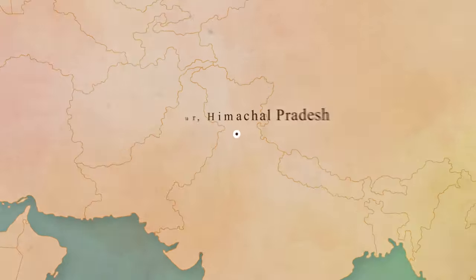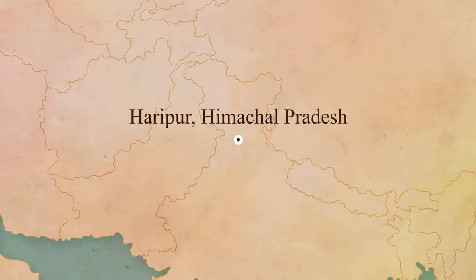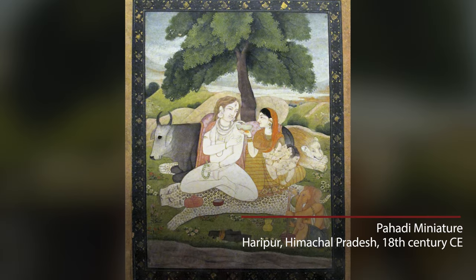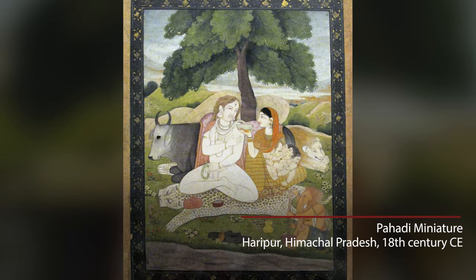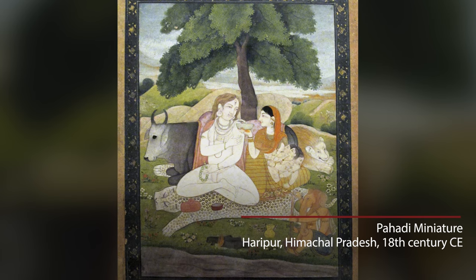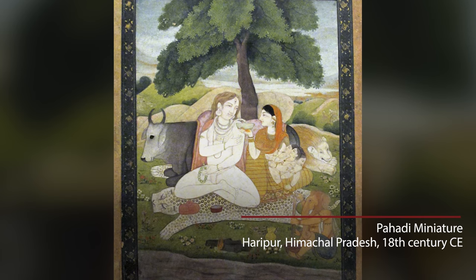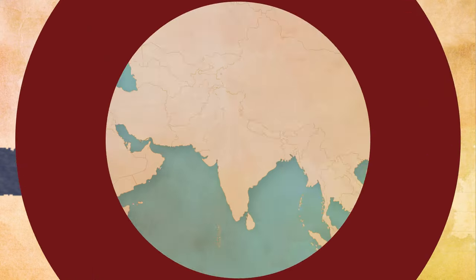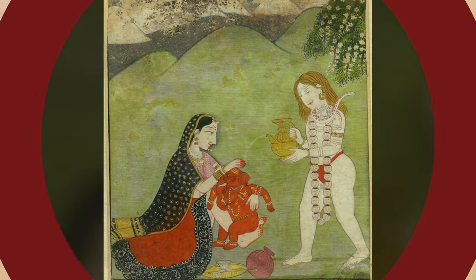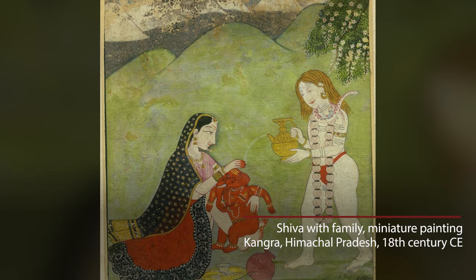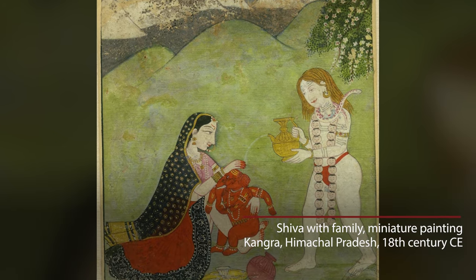In medieval times, we start finding miniature paintings showing the Shiv Parivar doing ordinary things — like sitting around the fire, telling each other stories. It becomes an image of domestic bliss, very different from the single, solitary hermit god called Rudra of the Vedas.